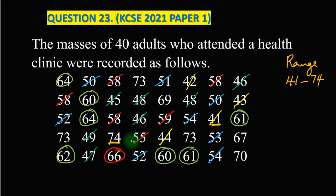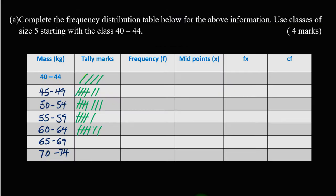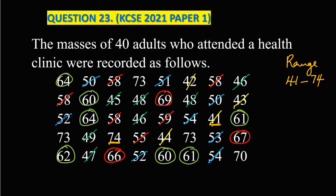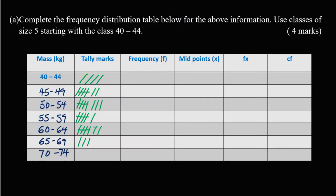For 65 to 69, counting: one, two, three - we have three values. Finally, for 70 to 74, counting: one, two, three, four, five - there are five values.